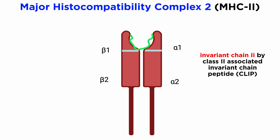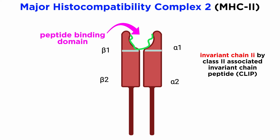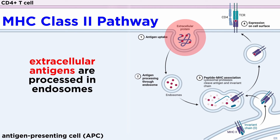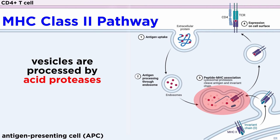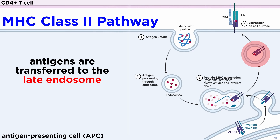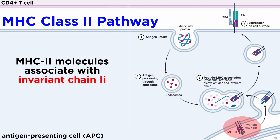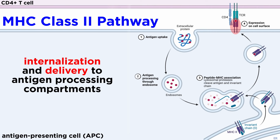Structurally, class II MHC is formed by two heavy chains divided into two alpha domains — alpha-1 and alpha-2 — and two beta domains — beta-1 and beta-2. The 3D binding grooves are similar to those in class I MHC, but are more open, thus allowing the binding and anchoring of larger peptides. Class II MHC mainly presents extracellular antigens processed in endosomes. Vesicles with external cargo are processed by acid proteases in the early endosomes, and this pre-processed content is transferred to the late endosome. MHC class II molecules associate with the invariant chain Ii in the endoplasmic reticulum and travel to the cell surface via the Golgi apparatus. From there, the complex is delivered to endosomal compartments or reaches the cell surface, where it may undergo internalization and delivery to antigen processing compartments.